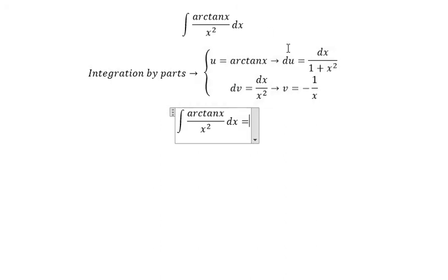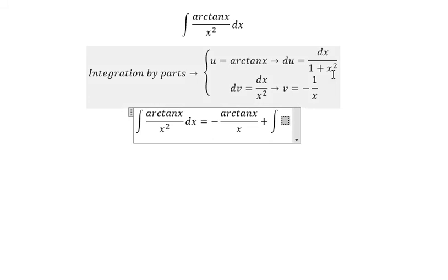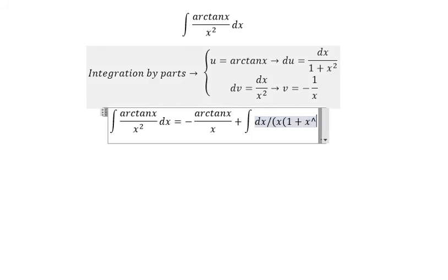So we have u multiplied with v. Because we have a negative sign here, you have the integral of dx over x multiplied with 1 plus x square.